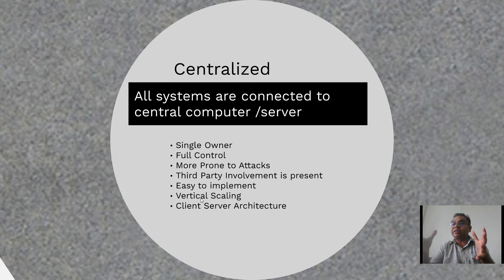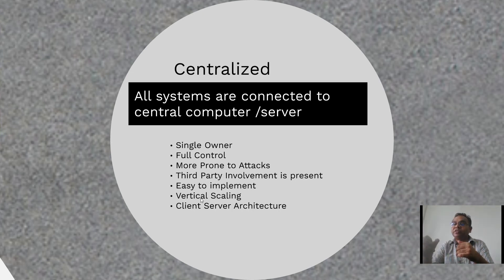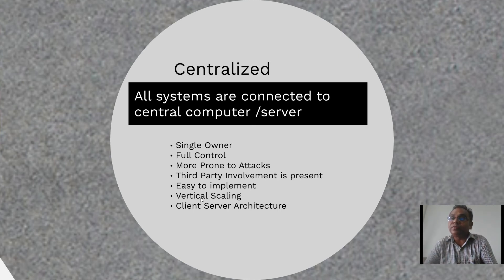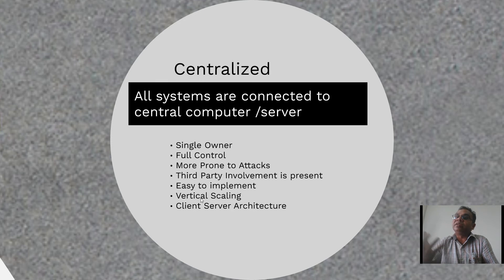For example, in banks — if I have to transfer my money to someone, the bank is a third party. Similarly, banks use the software of third parties, for example Finacle by Infosys. Therefore, third-party involvement is present in centralized computing. Centralized computing is easy to implement — we can implement it with very little technical knowledge. It requires less infrastructure and less cost.